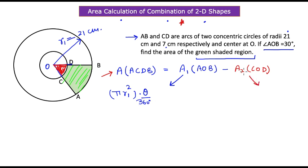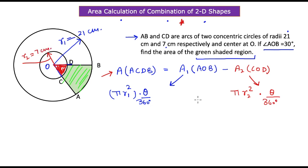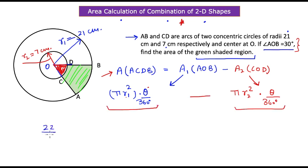Similarly, A2, the area of the smaller sector, is π·r2² multiplied by θ/360. Here r2 is the radius of the smaller circle, so r2 = 7 centimeters. We have r1, we have r2, and the sector angle θ is given as 30 degrees.